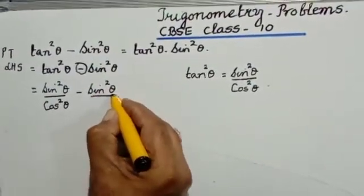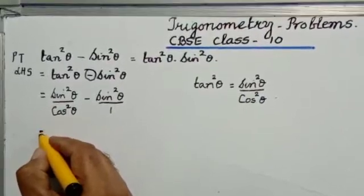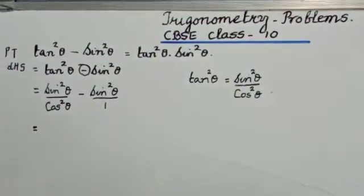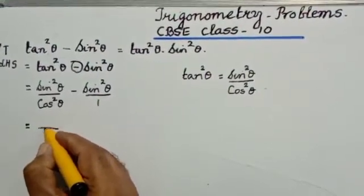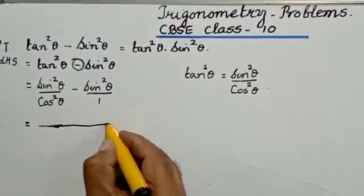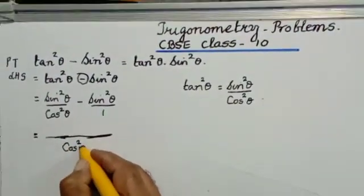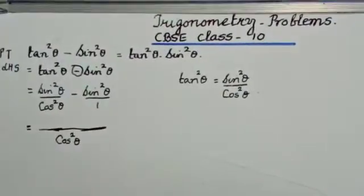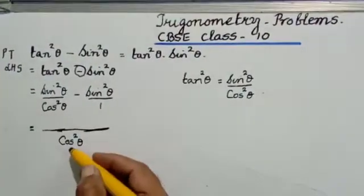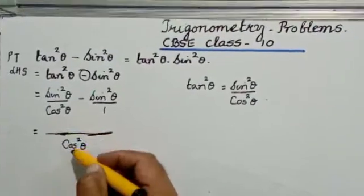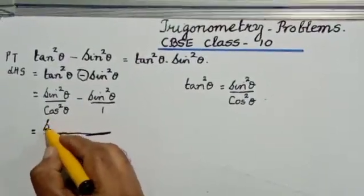In the denominator of the second term you will have one. Now you have two fractions with a negative sign in between. We will have to check the denominators and take the LCM. The LCM will be cos squared theta — that is the common denominator. Cos squared theta divided by cos squared theta is 1, and 1 into sin squared theta is sin squared theta.